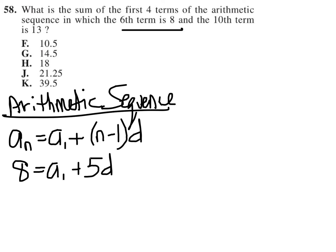I also am told that the 10th term equals 13, so I can make an equation that says 13 equals a_1. And since n is 10, 10 minus 1 is 9, so it becomes 9d.